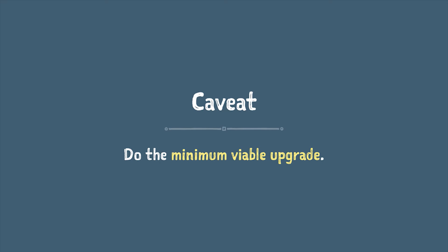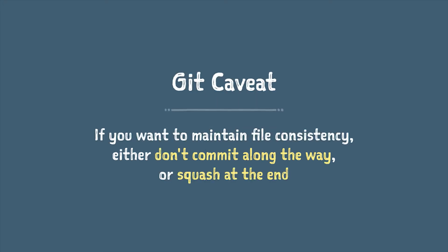Two caveats. First: do the minimum viable upgrade. A lot of people when they do this upgrade want to both upgrade the framework components and take advantage of all the new cool stuff. If you want to stay sane, do the minimum, commit it, make sure it works, and then upgrade later to use new syntaxes and features. Second caveat: if you do this upgrade with git commits along the way — which I'd recommend — you're going to lose the consistency of your files because git won't know what happened. So before your final merge, do a git squash at the end and it'll see the files as just having moved around a little bit.